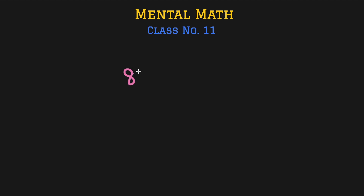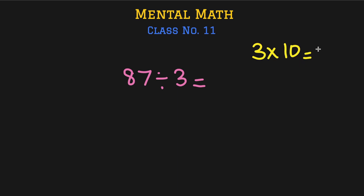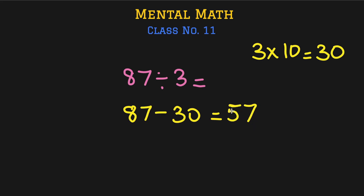Now let me solve these questions in a slightly different way. For 87 divided by 3, think in multiples of 10 from the table of 3. We know 3 times 10 is 30, so we start subtracting 30s from 87. 87 minus 30 equals 57 — count backwards in multiples of 10: 87, 77, 67, 57. We've subtracted 30 once, so keep a count of 10.